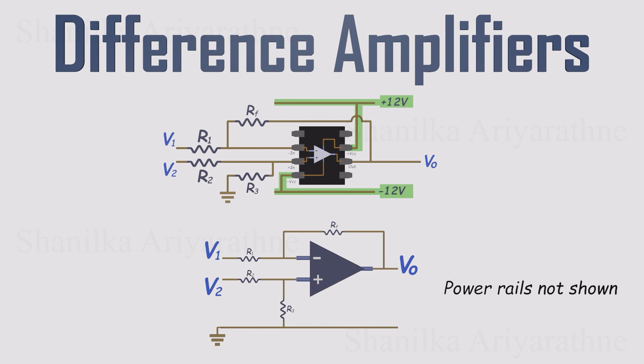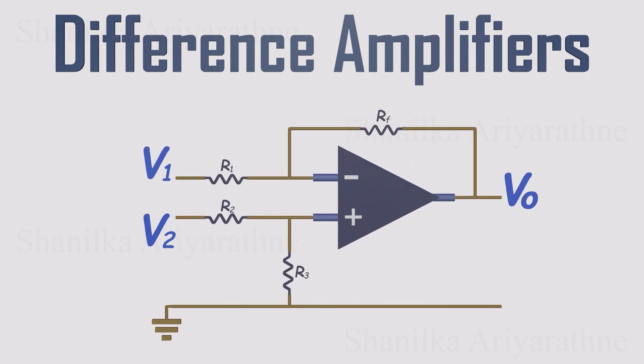Here's what we do show. A feedback resistor from the output to the inverting input. Another resistor tying the non-inverting input to ground. One signal fed into the inverting input through its own resistor. And the other signal fed into the non-inverting input through its own resistor. And that's it. That's the classic difference amplifier, often simply called a subtractor in its simplest form.